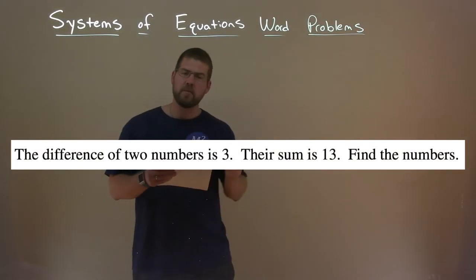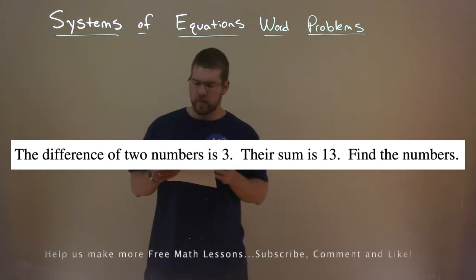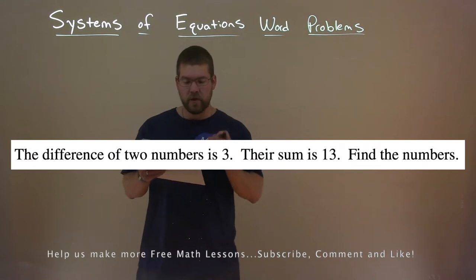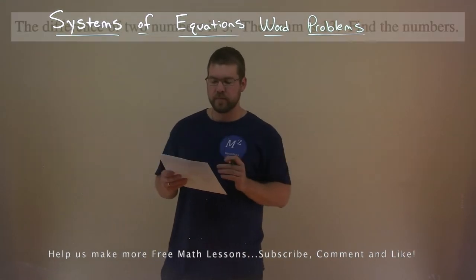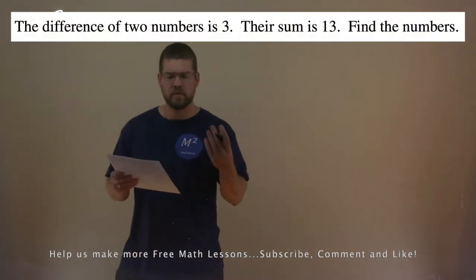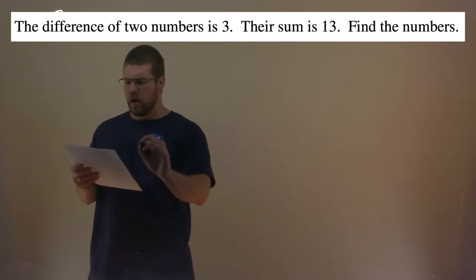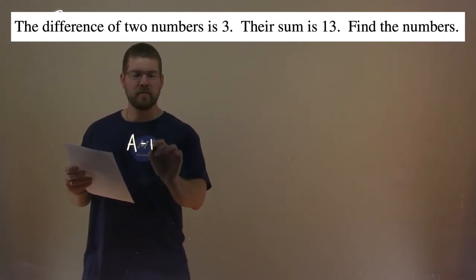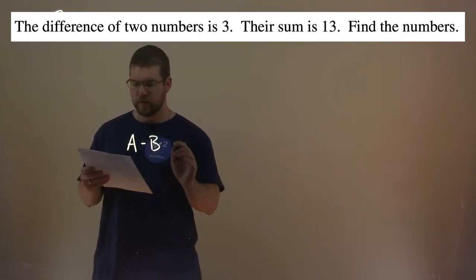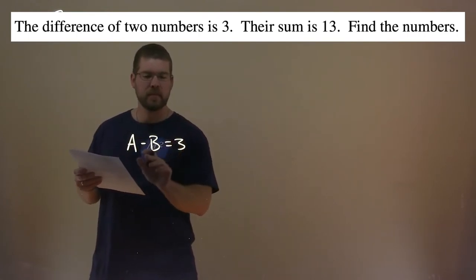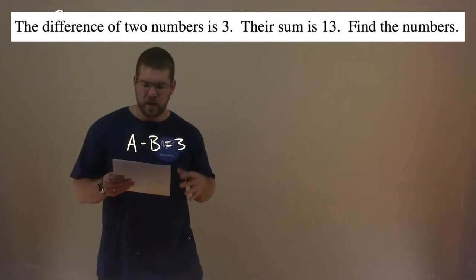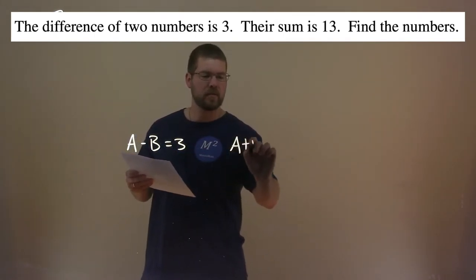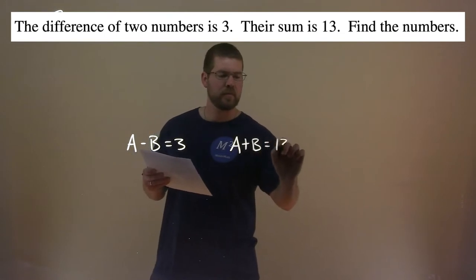We're given this problem: the difference of two numbers is 3, their sum is 13, find the numbers. So let's call the two numbers A and B. If A minus B, the difference of two numbers, equals 3, we have one equation. The second one: their sum is 13, meaning A plus B is equal to 13.